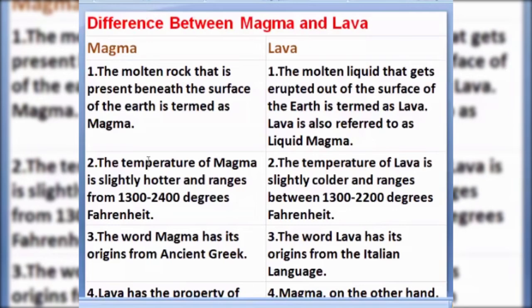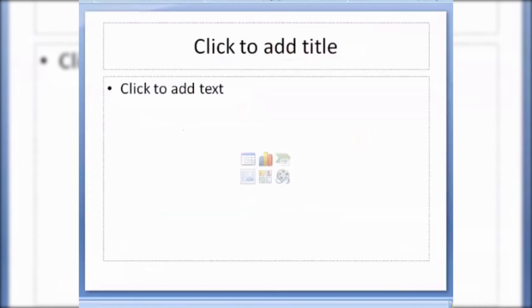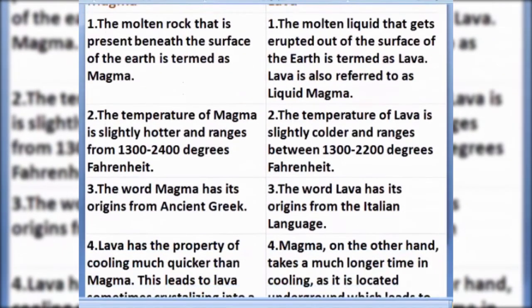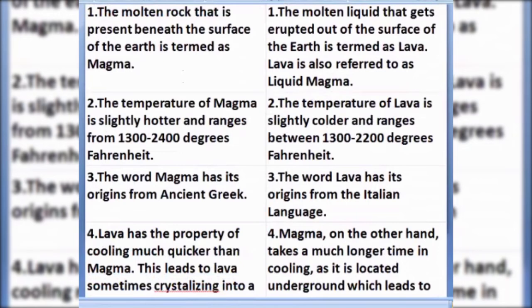The word magma is originated from a Greek word, whereas lava originated from an Italian word. Magma, which is situated inside the earth, takes much more time to cool than lava. Lava flows and cools faster than magma, while magma takes more time to cool down.